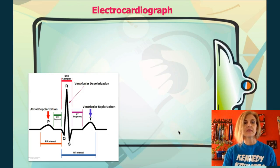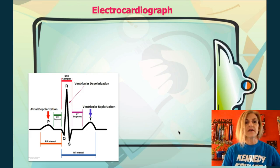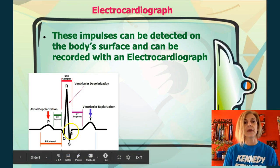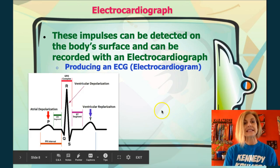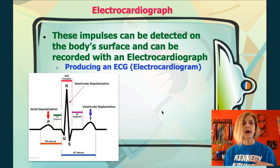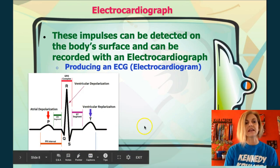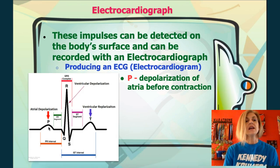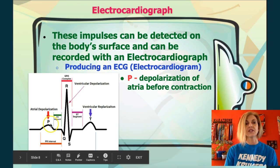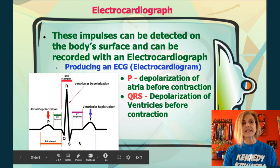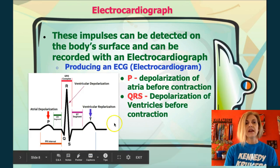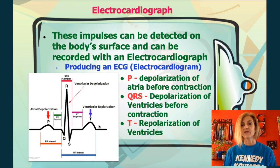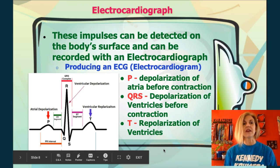We can read the impulses of the heart because they can be detected on the body surface using an electrocardiogram, or ECG. You should be able to identify the different waves: the P, the QRS, and the T. The P wave is the depolarization of the atria causing atrial contraction. The QRS phase is the depolarization of the ventricles causing ventricular contraction. The T wave is the repolarization of the ventricles, resetting so it's ready to receive another signal.